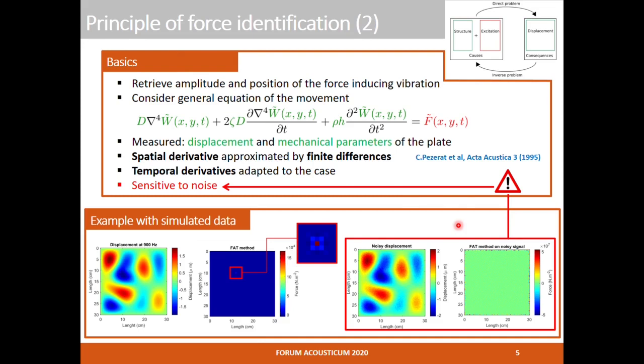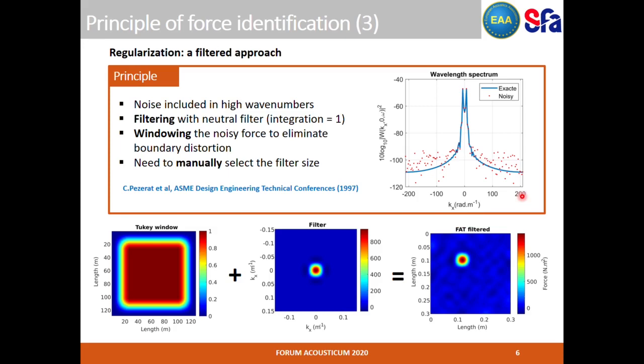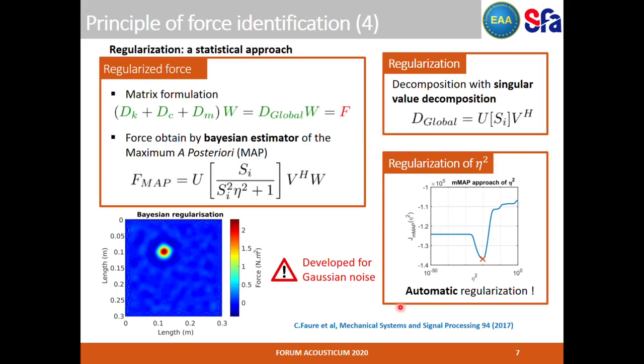Spatial derivations will be even more problematic at the edge of the field of view because of the use of non-centered schemes of derivations. This method must therefore be regularized. A first approach for regularization is to consider where the artifacts due to noise are located. These are located in the high wave numbers, so a first approach is to filter the signal using a neutral low-pass filter to attenuate the impact of the noise on the resolution while not distorting the signal. Edge derivatives can be attenuated by a 2D window applied on the useful signal. This method yields a correct but coarser estimate of the force. Note that the size of the filter also needs to be adapted according to the noise included in the measurement.